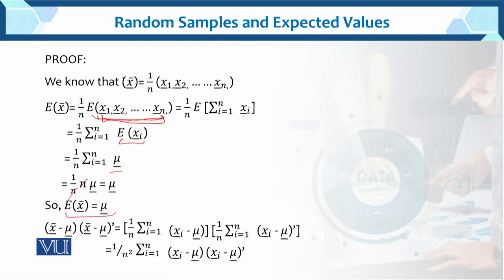Now for the next part, we consider the cross product terms. We expand (x-bar minus mu)(x-bar minus mu)-transpose, which opens to 1 over n times sum i=1 to n of (xi minus mu), times 1 over n times sum i=1 to n of (xi minus mu)-transpose. Combining: 1 over n-squared times sum i=1 to n of (xi minus mu)(xi minus mu)-transpose. This gives us the cross product term.